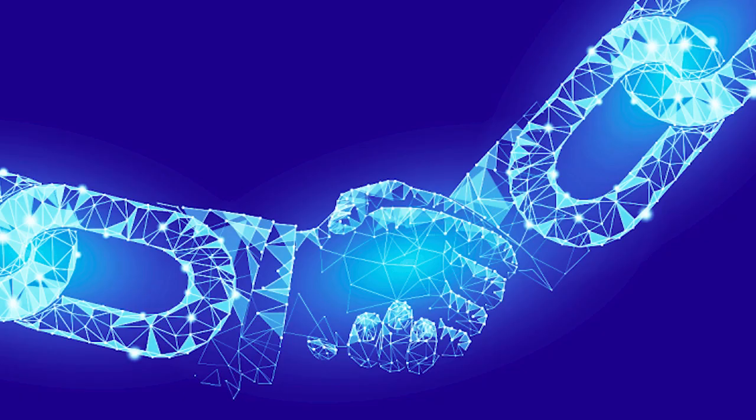What is blockchain technology? Blockchain is a shared immutable ledger for recording transactions, tracking assets and building trust in a business network. An asset can be tangible like a house or cash, or it can be intangible like intellectual property, patents and all. Virtually anything of value can be tracked and traded on a blockchain network, reducing risk and cutting costs for all involved.